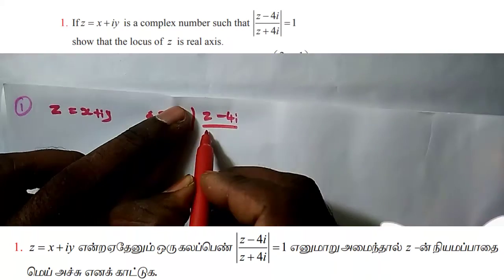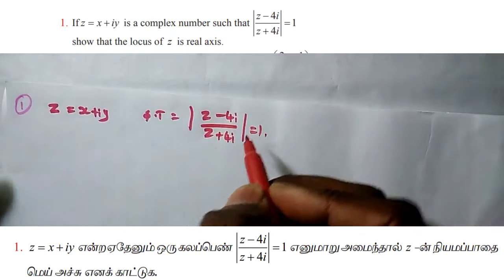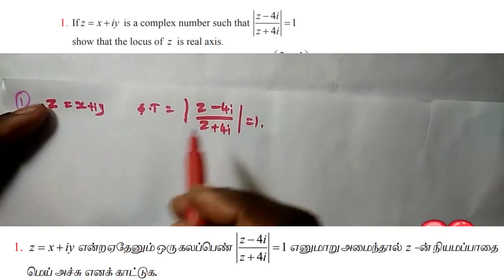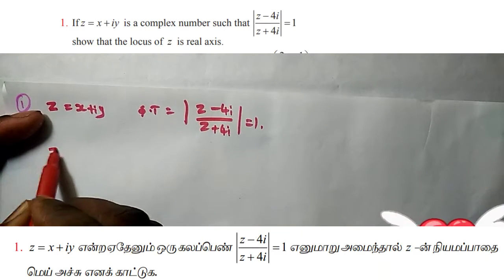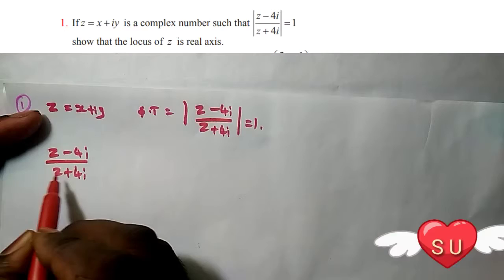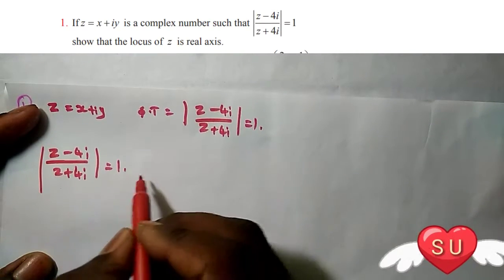...such that modulus of (z - 4i) divided by (z + 4i) is equal to one, show that the locus of z is the real axis. So first, we have modulus of (z - 4i) divided by (z + 4i) equal to one.